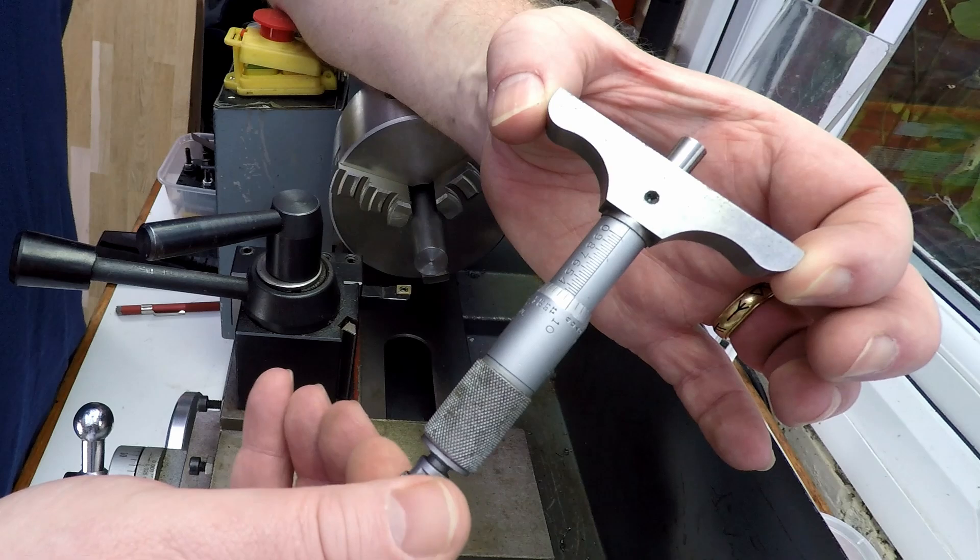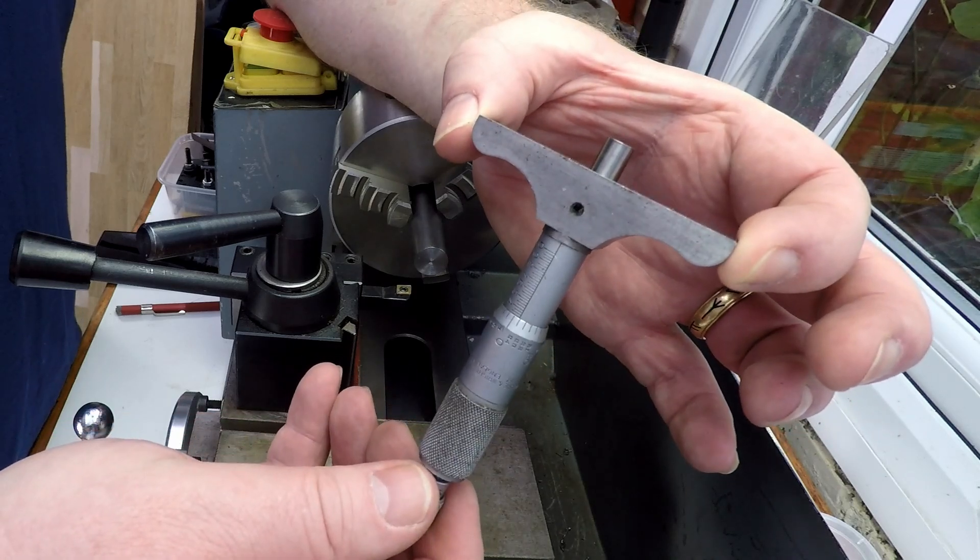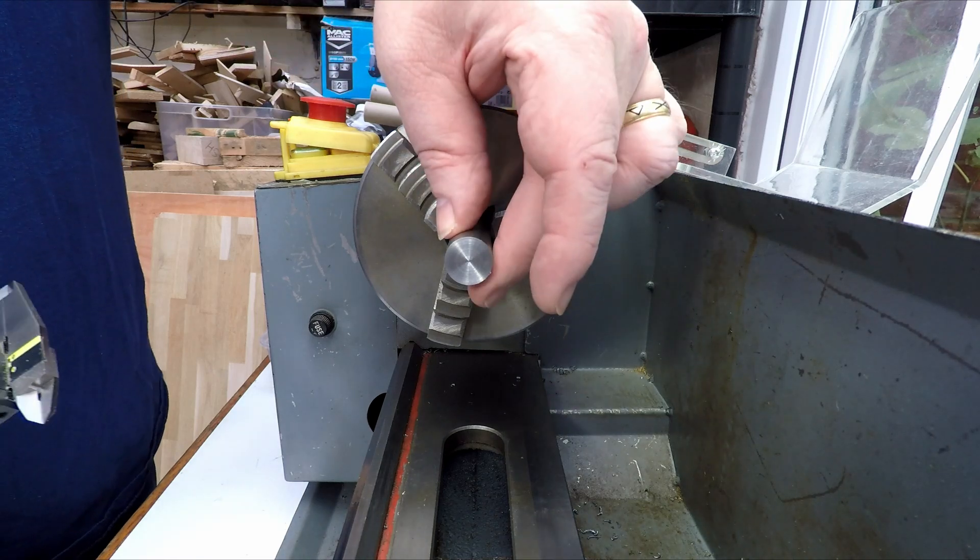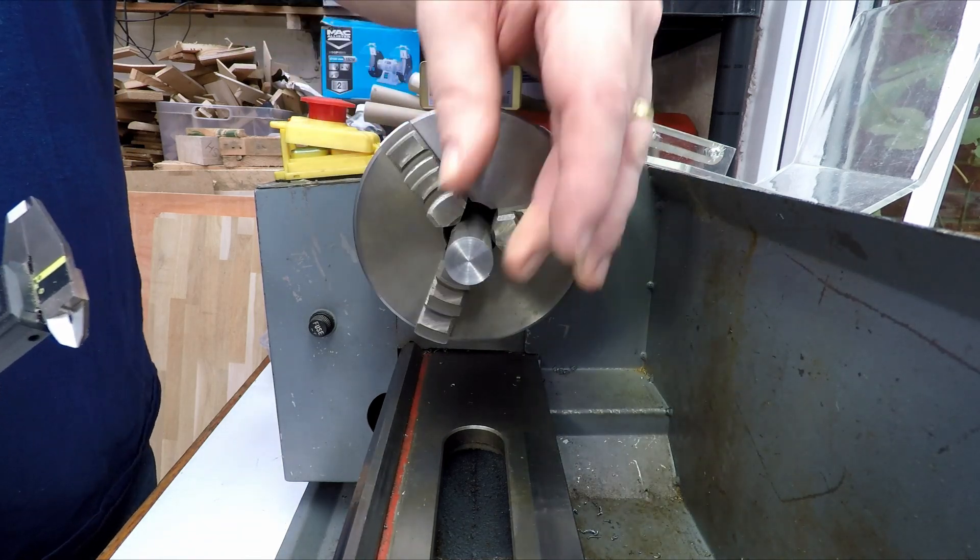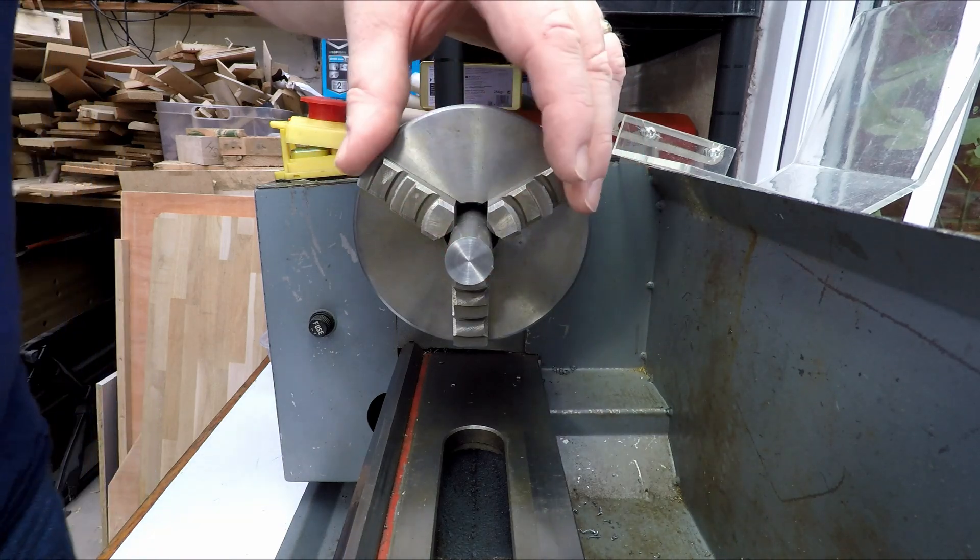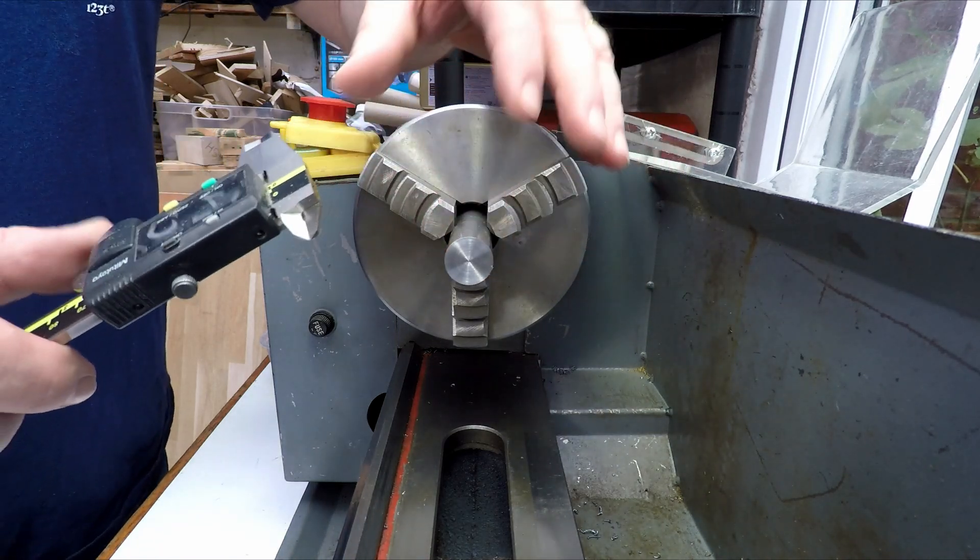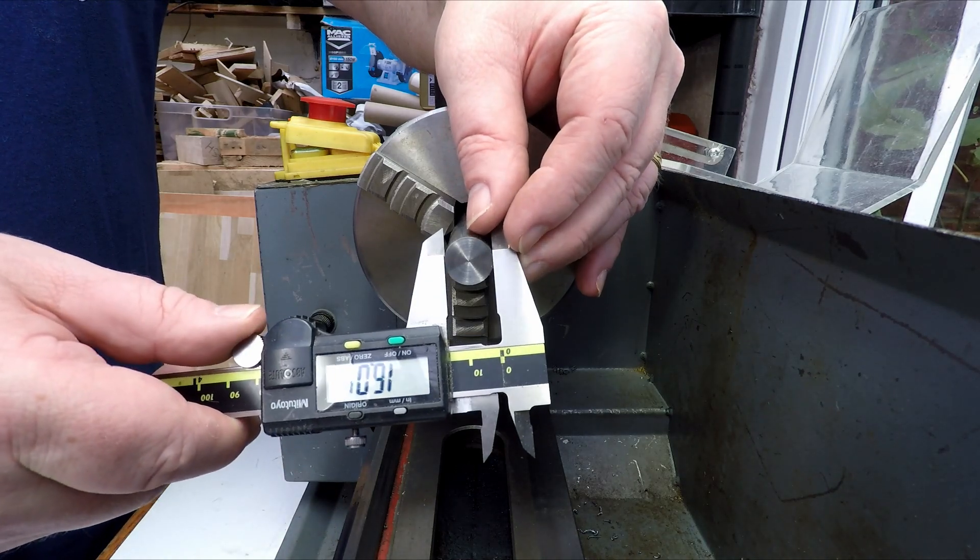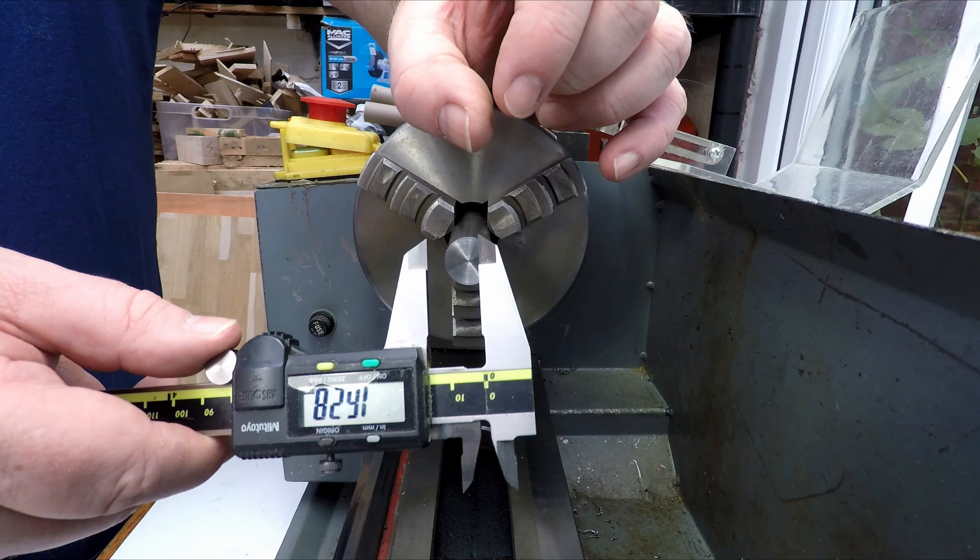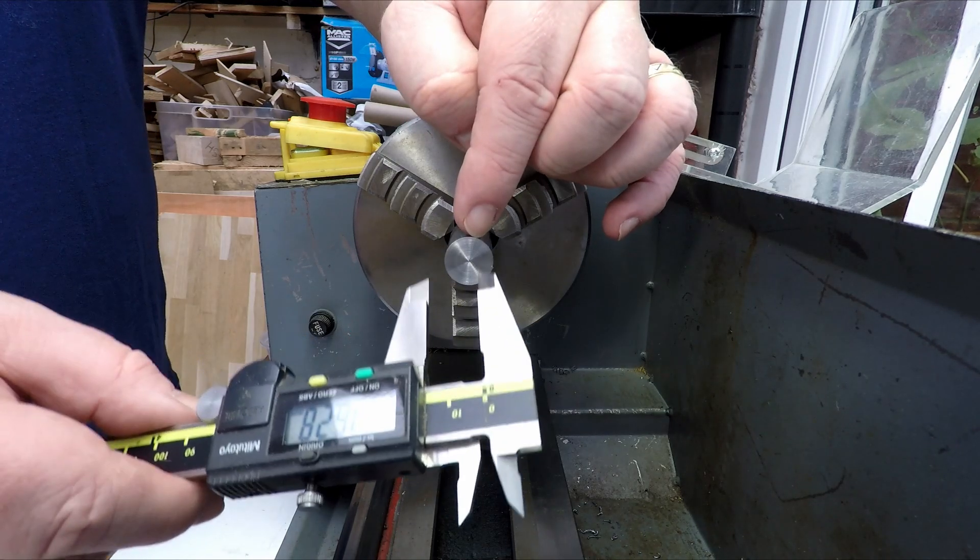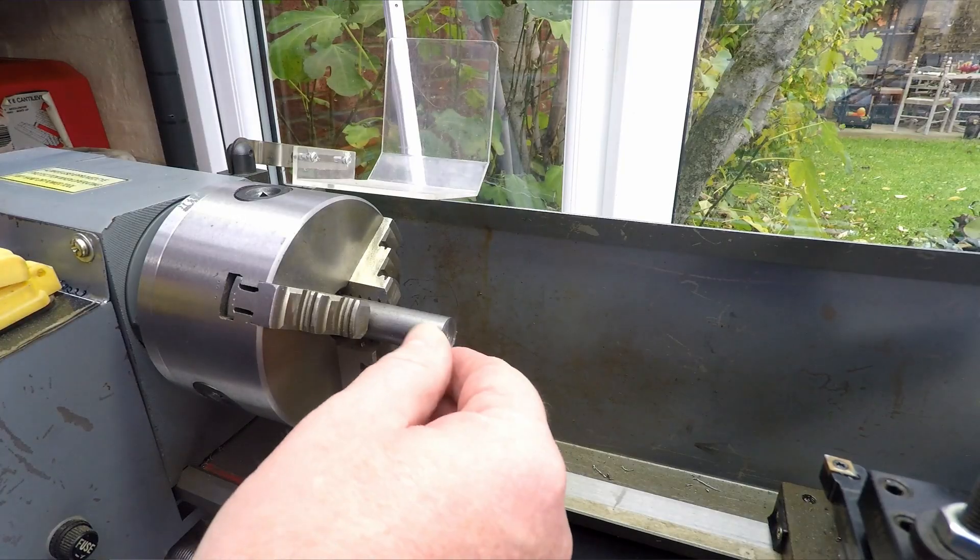The gist of what we'll be doing is put a bit of round bar in the chuck—you want this to be a reasonable size. This is a 16mm bar, just under three-quarters of an inch. We're going to measure the diameter with the caliper, work out half of that diameter, and then set the tool height to be half the diameter.